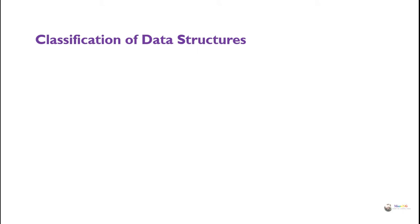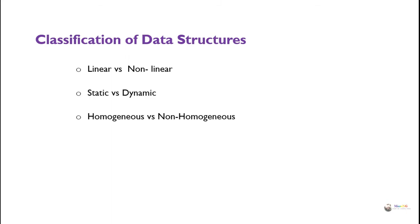Data structures are classified into three different categories. The first is linear versus non-linear. The second is static versus dynamic. And the third is homogeneous versus non-homogeneous data structures.